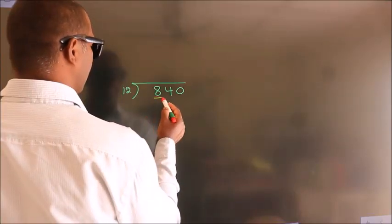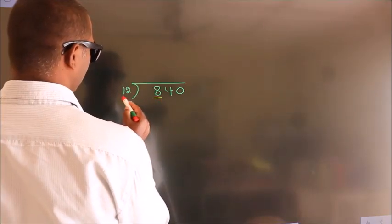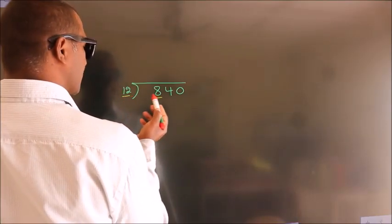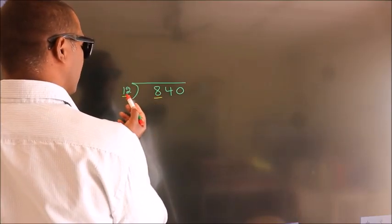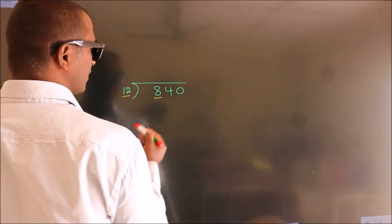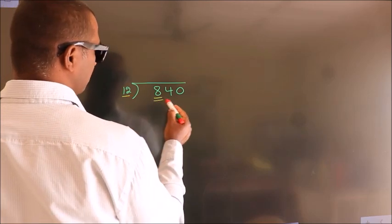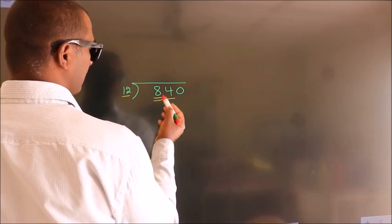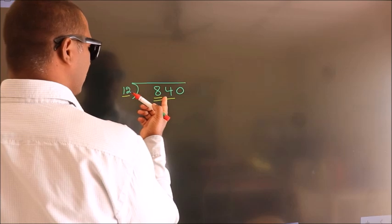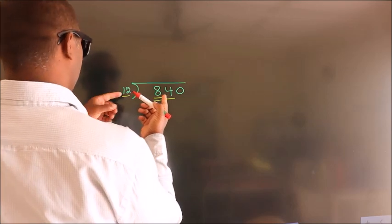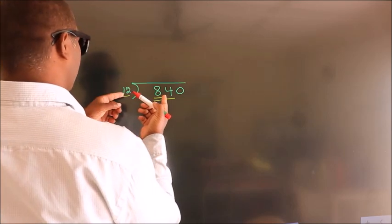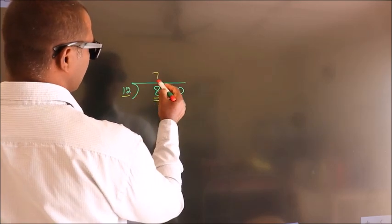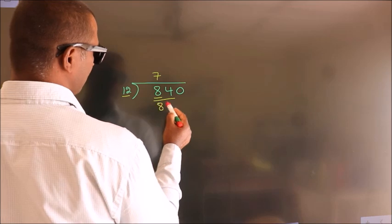Here we have 8, and here 12. Since 8 is smaller than 12, we should take 2 numbers: 84. When do we get 84 in the 12 table? 12 sevens are 84.